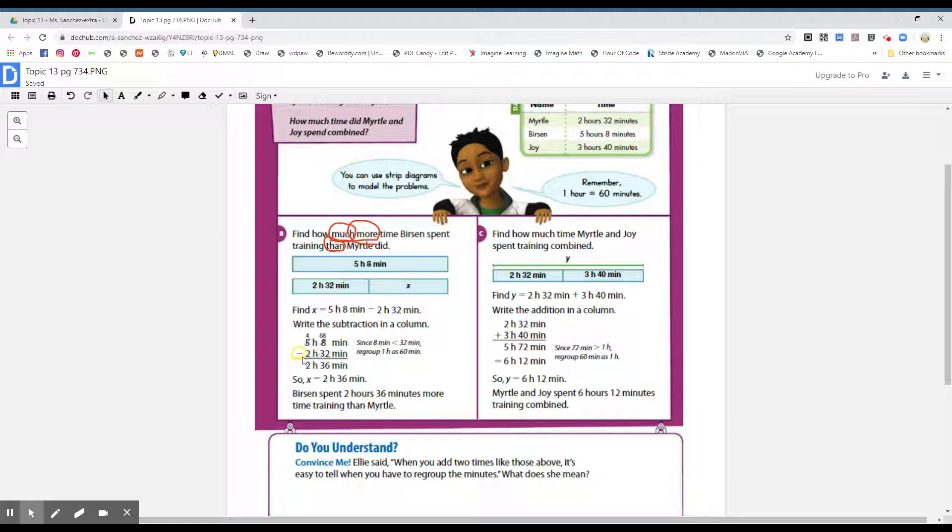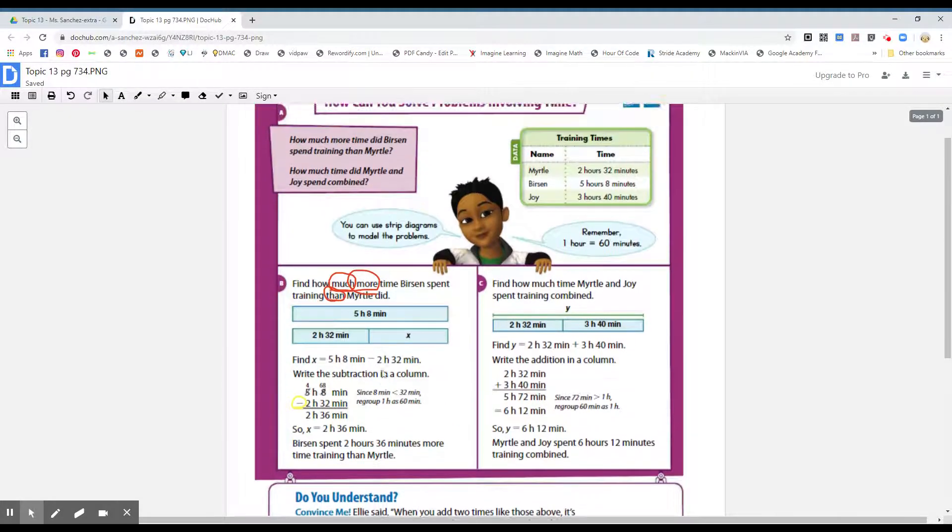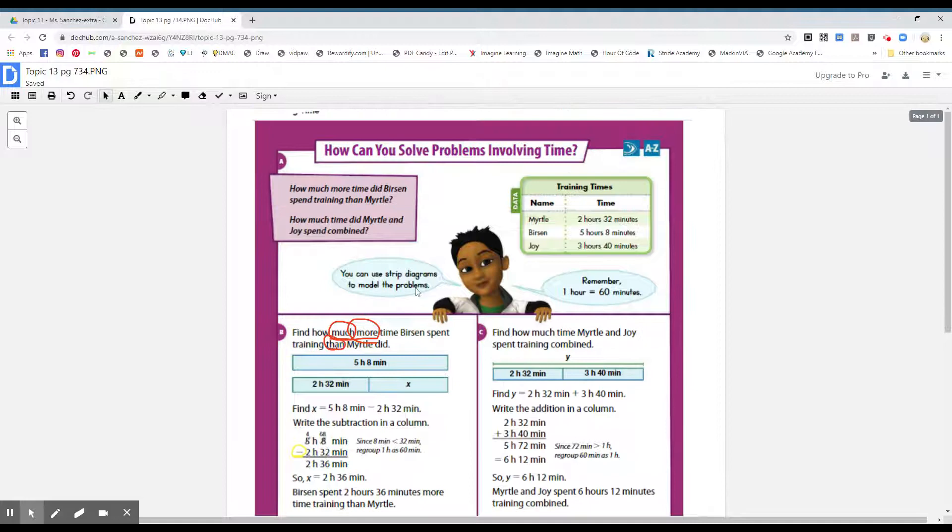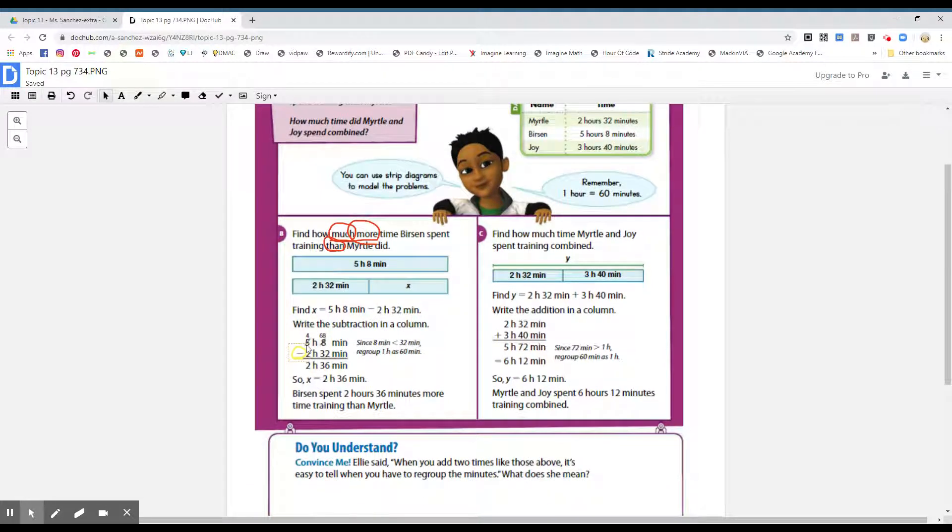But the thing with that, boys and girls, you can't subtract eight take away 32. You do have to regroup. And you can see, boys and girls, when they regroup, the five became a four. They took away one, but one hour, boys and girls, that eight is one hour. They just take away one number. They took away one hour, the units. And boys and girls, remember one hour is equivalent to 60 minutes. So even though they just regrouped one, you're really regrouping 60. This one hour is equivalent to 60 minutes. So they already had eight minutes there. So that is how they got that 68.